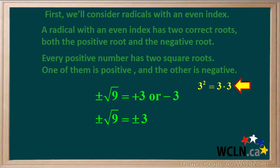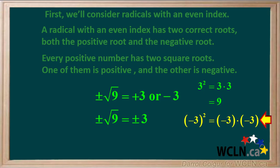This makes sense because positive 3 squared equals 3 times 3, which equals 9. And negative 3 squared equals negative 3 times negative 3, which is also equal to 9.